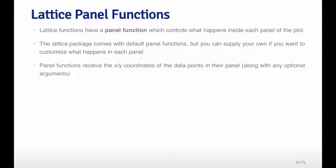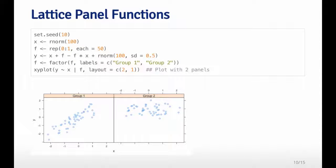Each panel function will get, for every panel, the x, y coordinates of the points that are in that plot. Here I'm generating some random data that follow the linear model. I create a factor variable which is basically just separating out group one and group two, and now I want to plot x and y by group.